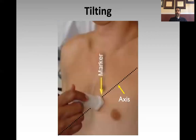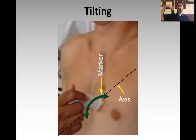Tilting is sort of the opposite — instead of changing the angle perpendicular to the axis, you're changing it parallel to the axis. You may have heard the term 'rocking' — it's the same thing as tilting, but we want to be using the term 'tilt.' So when I teach you at the bedside, I'll be using the terms 'angle' and 'tilt' so I can give you an idea of what I want you to do with the probe without having to touch it.